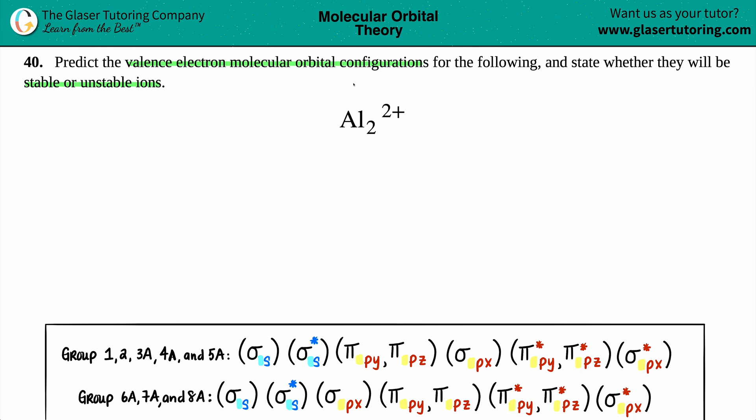In order to write the molecular orbital configuration for this molecule, we first have to find out how many valence electrons we're dealing with. And this all comes from the group number of aluminum. If I look on the periodic table, aluminum is in either group 3A or 13. It really just depends on what periodic table you're looking at. So 3A or 13, the lucky number is 3. Aluminum generally has 3 valence electrons.